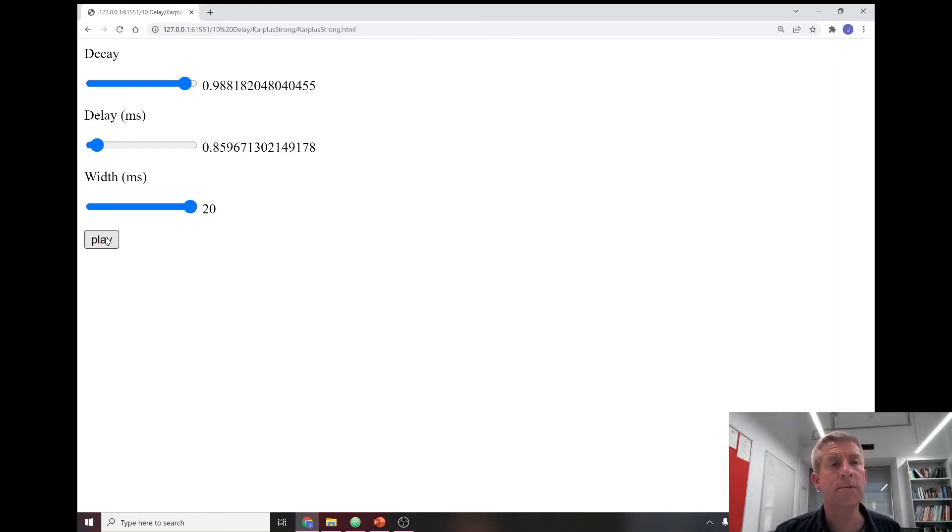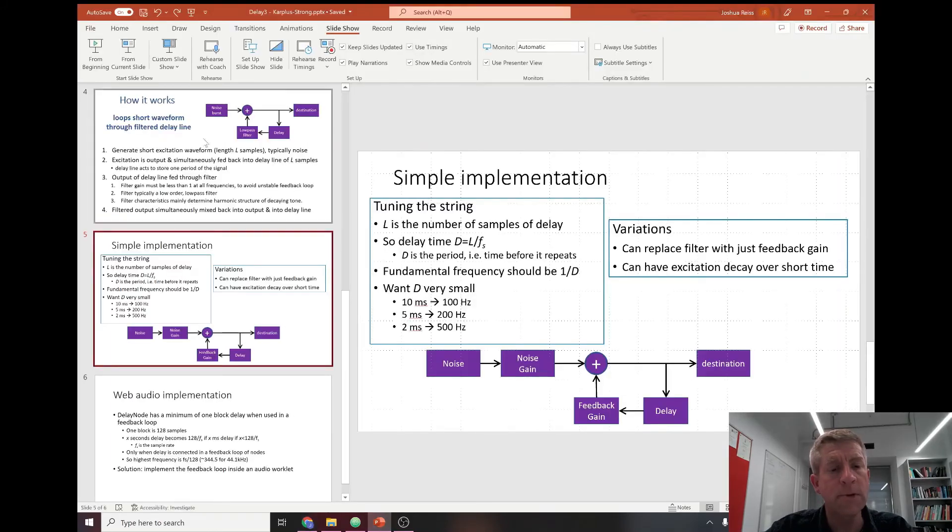So that's the idea of the Karplus-Strong algorithm. It can easily be extended by putting in that low pass filter as was mentioned, or by having different excitation waveforms. It doesn't have to be noise. You could have used an oscillator. It just needs to be a short period waveform. However, there is a problem, so let's return to the slides.